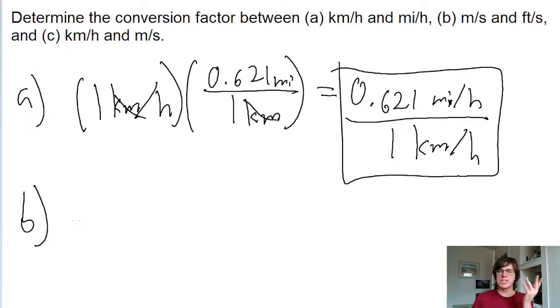Now let's move on to part B, which is also fairly simple. We're starting with one meter per second and converting to feet per second. Again, the time unit is the same - seconds in both cases - so we're really just looking for a conversion between meters and feet.